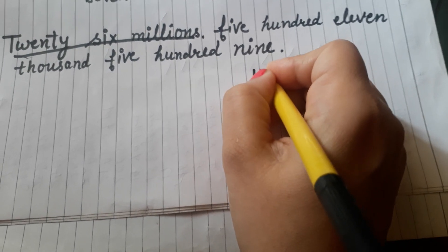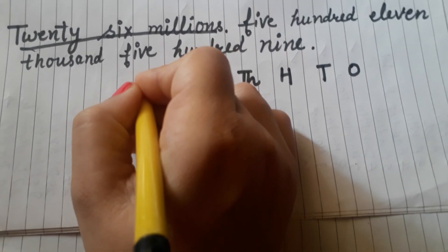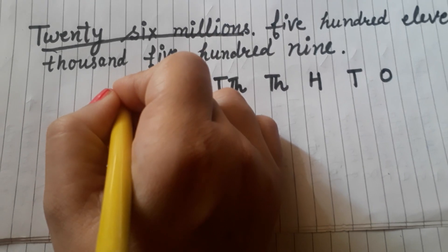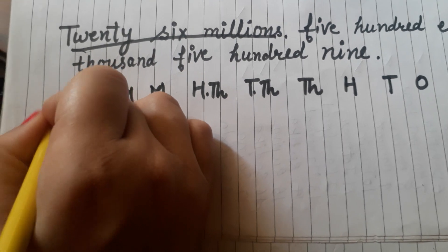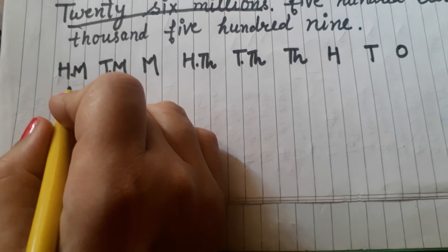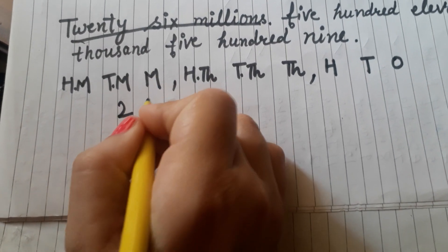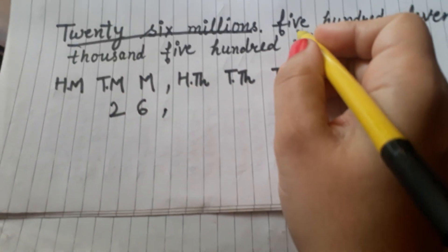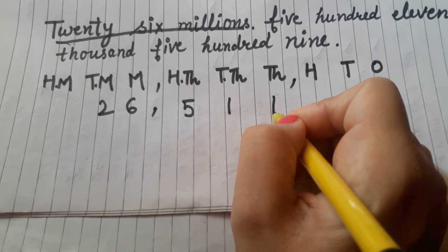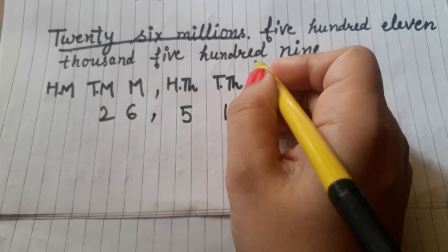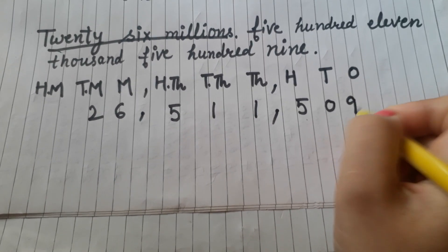tens, hundreds, thousands, ten thousands, hundred thousands, million, ten million, hundred million. For 26 million, we write 26 in the millions places. For 511 thousand, we write 511 in the thousands family. And the leftover is 509 in the ones family.